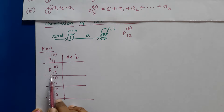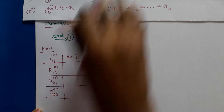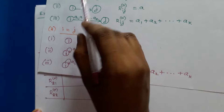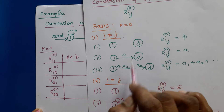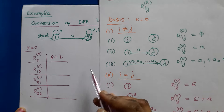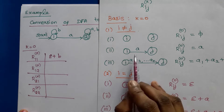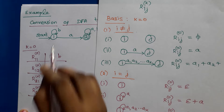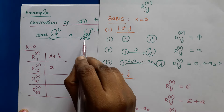For r12, i is 1 and j is 2, so i is not equal to j. We refer the first basis condition and check the number of transitions from 1 to 2. There is a single transition, so the regular expression is that symbol alone, which is a. So r12 to the power 0 is a.